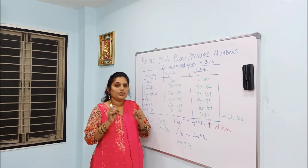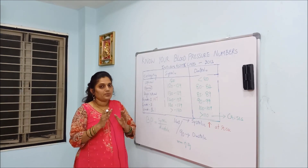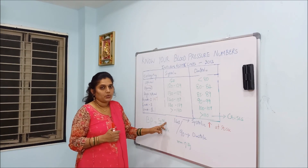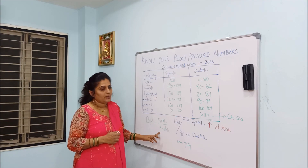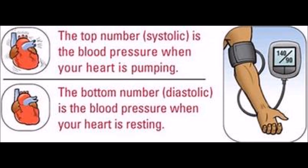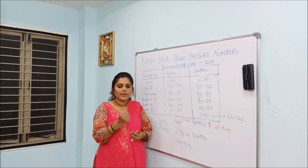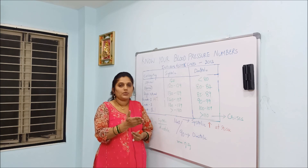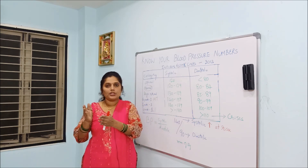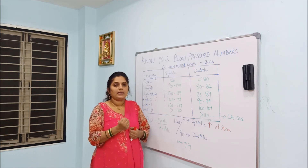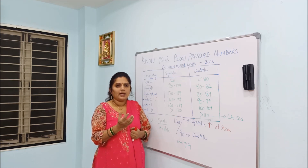First of all, we should understand how blood pressure is measured. We need to measure systolic pressure and diastolic pressure. Systolic pressure is the pressure when the heart pumps blood to reach the tissues and organs. Diastolic pressure is when the heart is relaxed — that is diastolic.